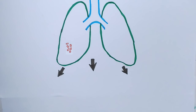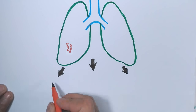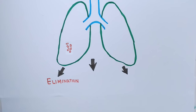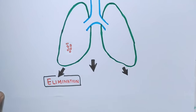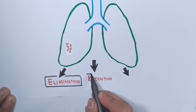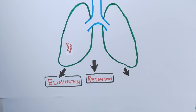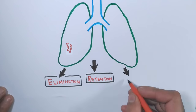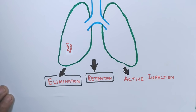There are three case scenarios for Mycobacterium tuberculosis in the alveoli: the first one is elimination, the second one is retention, and the third one is active infection.